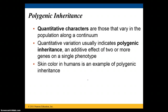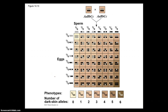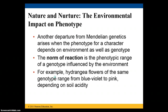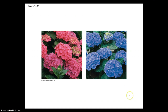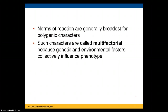For example, skin color is influenced by multiple alleles that code for melanin pigment — the more alleles present, the darker the skin; the fewer, the lighter. The environment can also impact phenotype. The norm of reaction is the phenotypic range influenced by the environment. Hydrangeas, for instance, range from blue-violet to pink depending on soil acidity, and some reptiles have their sex determined by the temperature at which eggs develop. Norms of reaction are generally broadest for polygenic characters.